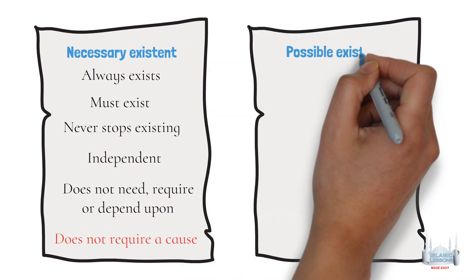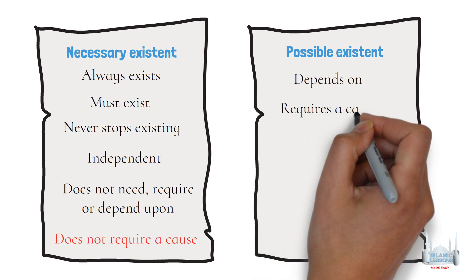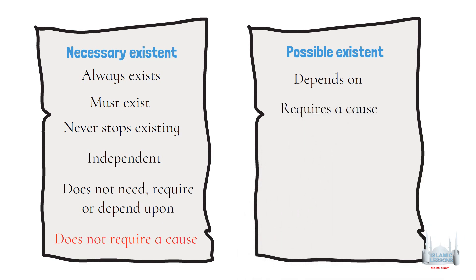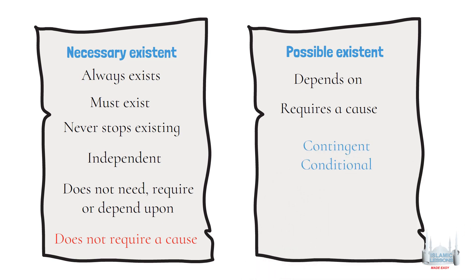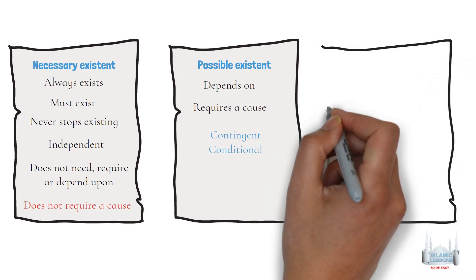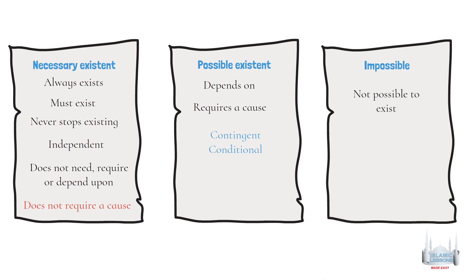2. Possible existent: it is an existent which depends on another existent in order for it to be realised. In other words, it requires a cause. In philosophy, the term used is contingent or conditional — it has conditions for it to be realised. 3. Impossible means that it is not possible to exist.